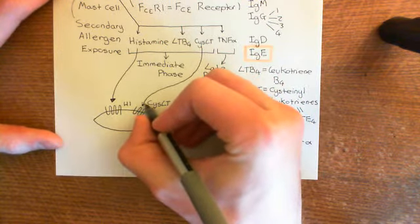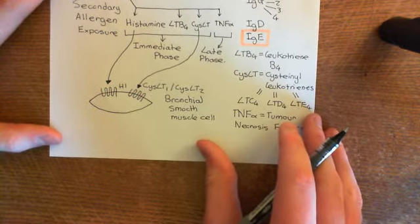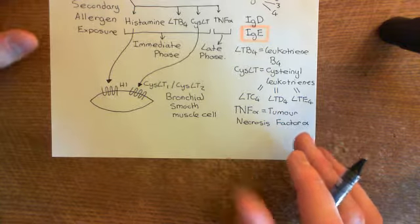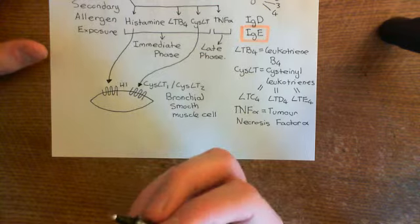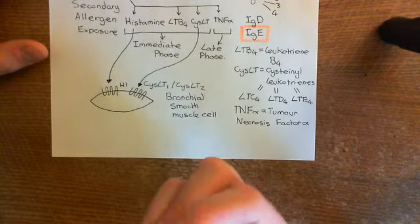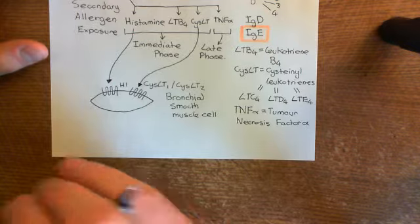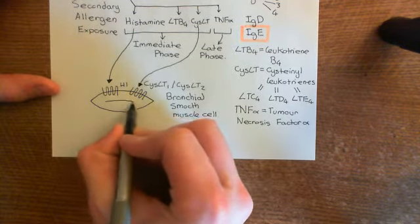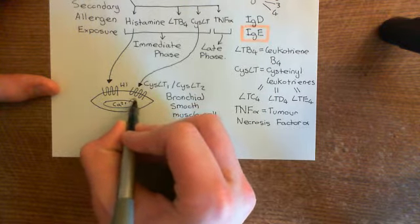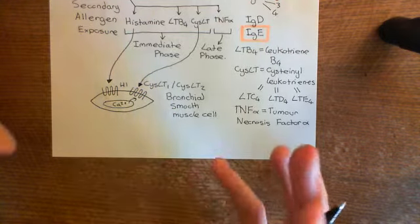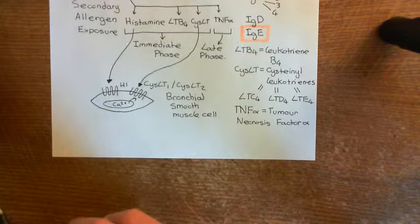Leukotriene C4, D4, and E4 diffuse back to bronchial smooth muscle cells and activate the cysteinyl leukotriene receptors. Both receptor types activate the GQ pathway, resulting in the production of inositol-1,4,5-trisphosphate (IP3), which acts on IP3 receptors in the endoplasmic reticulum, causing the release of calcium and triggering contraction of the bronchial smooth muscle cell.